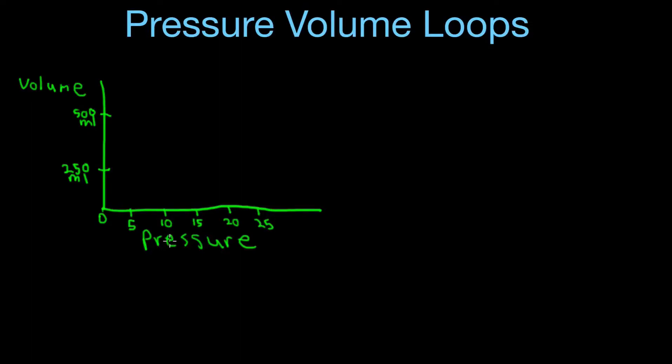Okay, so we're talking about pressure volume loops and we're going to cover what a normal pressure volume loop should look like. You can see on the left side, the y-axis, we have volume, and on the bottom, the x-axis, we have pressure.